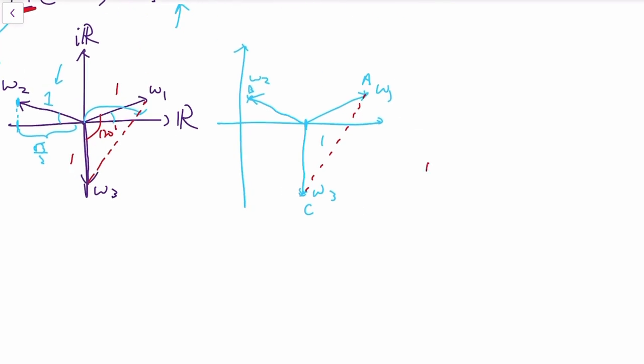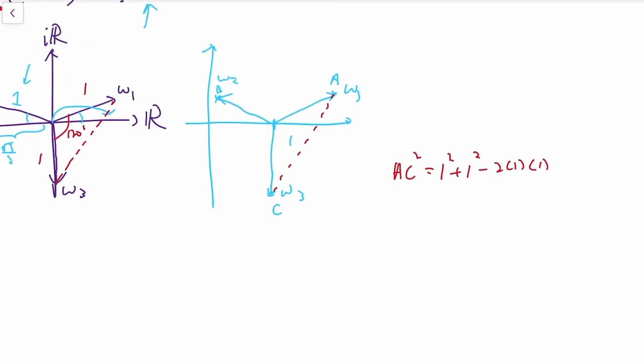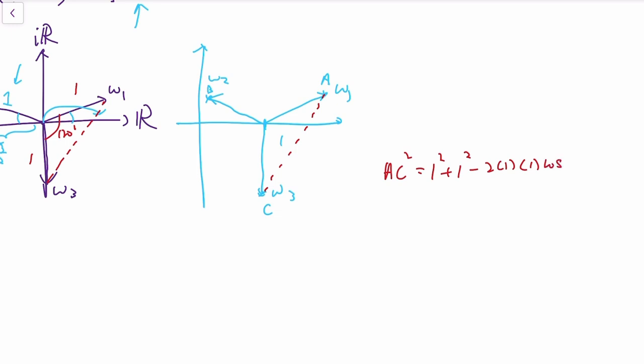So we can simply do cosine rule. So AC squared is one squared plus one squared minus two times one times one times cosine 120, which is 2 minus—